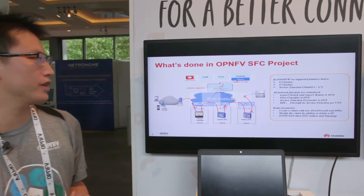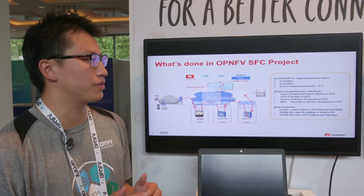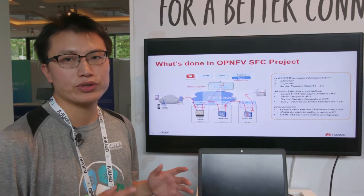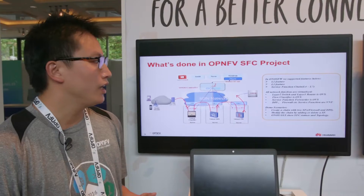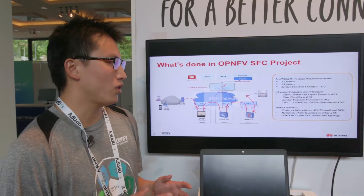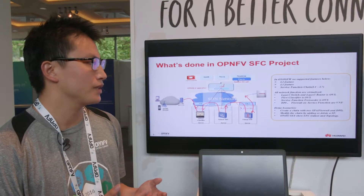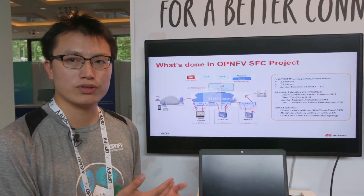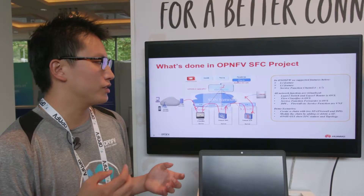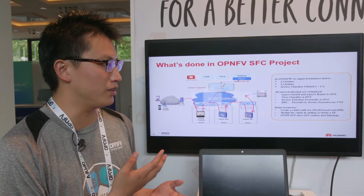What is done in the OPNFV service function chain project? SFC is a sub-feature in the ONOS FW project. We support several features: layer 2 and layer 3, which meets the basic needs for the DC network, and service function chaining as a layer 4 to layer 7 feature. All network functions are virtualized — the layer 2 switch and layer 3 router use OVS, the flow classifier also uses Open vSwitch, the service function forwarder may use OVS, and service functions such as DPI, firewall, and others are VNFs.